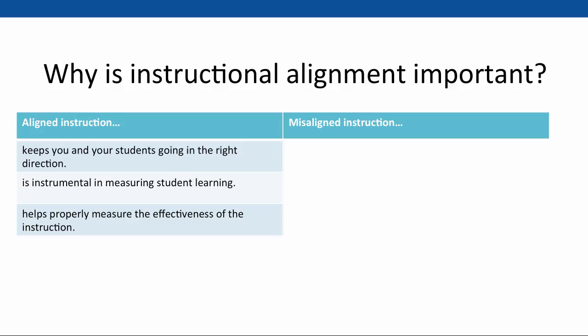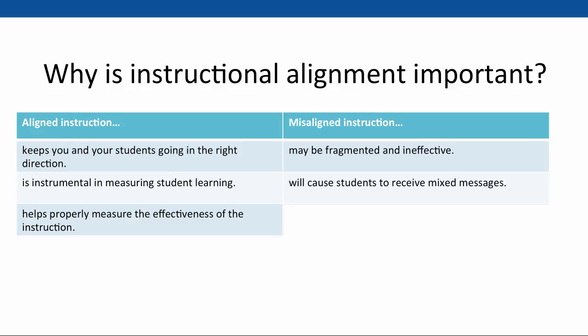On the other hand, misaligned instruction may be fragmented and ineffective. It will cause students to receive mixed messages because you're teaching one thing but assessing them on something different altogether. It will also cause students to spend time on meaningless activities, practicing concepts or skills that aren't going to be assessed or used later in any meaningful way.